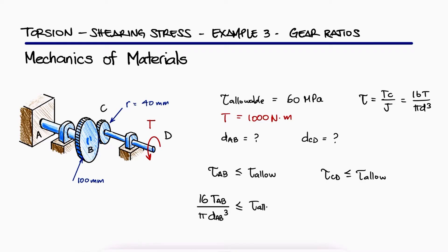We know that we need to find the internal torques AB and CD to be able to solve for the diameters.